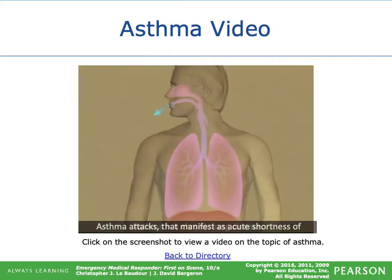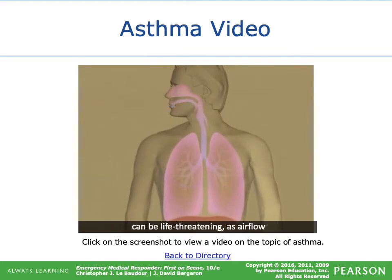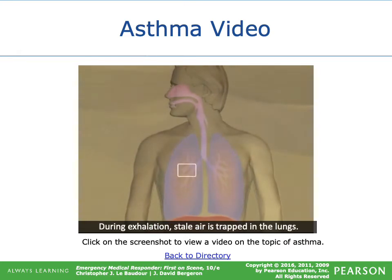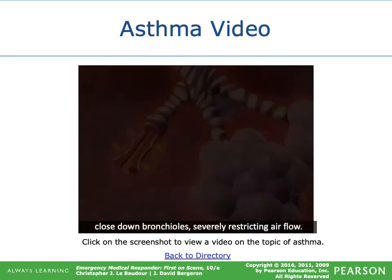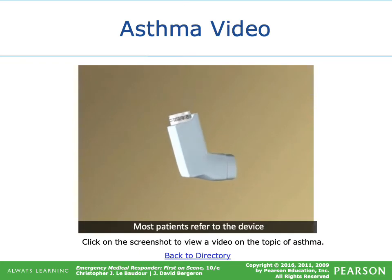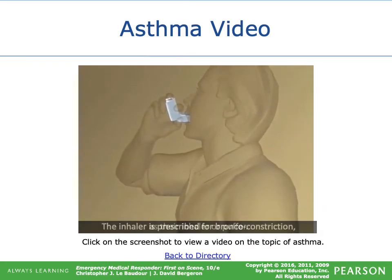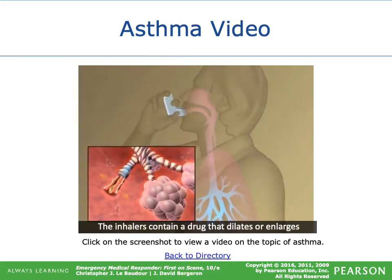Asthma is a chronic lung disease. Attacks manifest as acute shortness of breath, usually accompanied by wheezing, and may be triggered by infections, allergies, or other airway irritants. During an asthma attack, airflow is restricted in one direction — the patient inhales normally but during exhalation, stale air is trapped. Bronchial contractions and excess thick mucus close down the bronchioles. Treatment involves a metered dose inhaler, which delivers a precisely measured dose of medication that dilates the air passages to relieve bronchoconstriction.